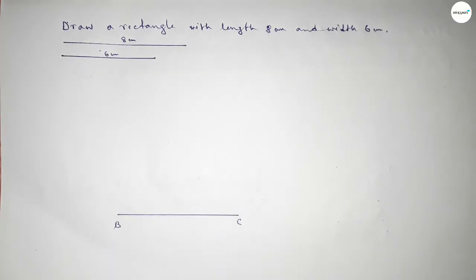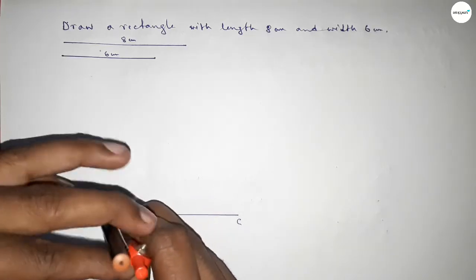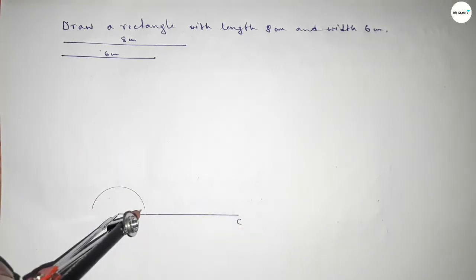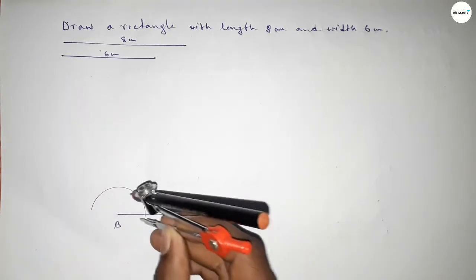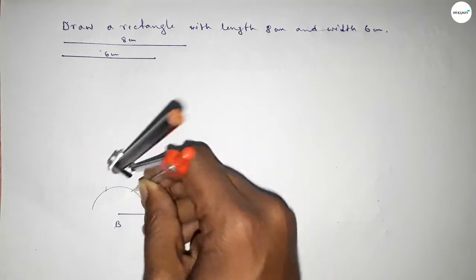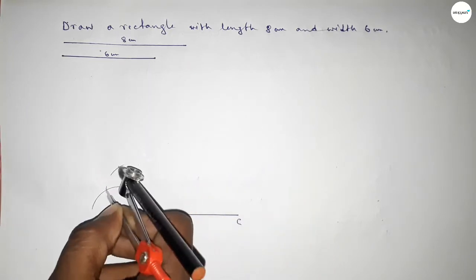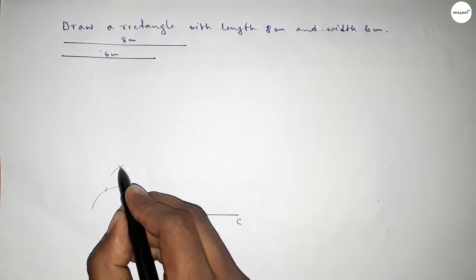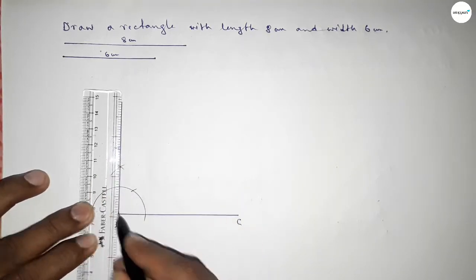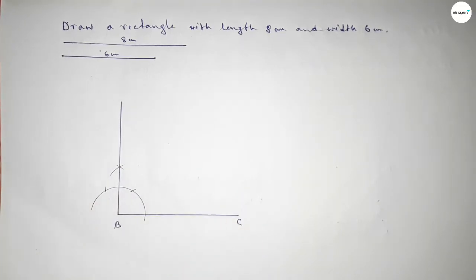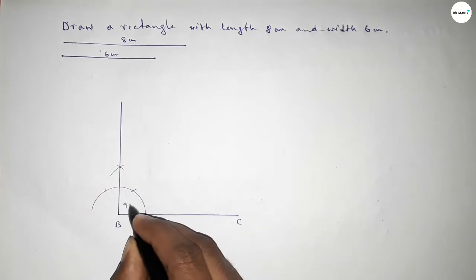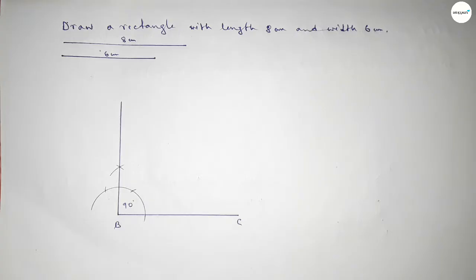Now we have to draw a 90 degree angle on the point B. Putting the compass on point B, taking any length, and drawing an arc. Putting the compass here, cut here and cut here, then drawing an arc again with the same length and cut here, so both curves intersect at a point. Joining this to get a 90 degree angle — checking, this is perfectly a 90 degree angle.